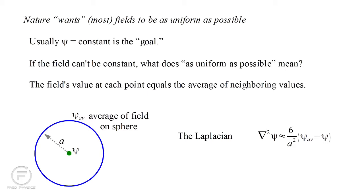Specifically, for a very small radius A, the Laplacian is basically six over A squared times the difference of psi average and psi.